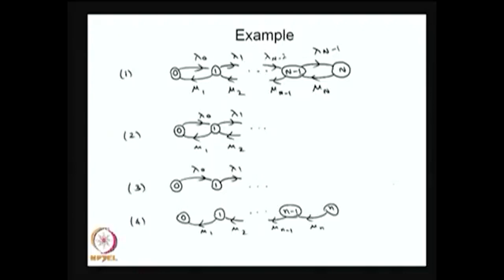The third example: the system keeps moving forward, so all states are transient. It is not irreducible — it is a reducible model. As t tends to infinity, the system will be in some infinite state, so one cannot define an infinite state and the limiting distribution does not exist. The fourth example is a finite model, but all states do not communicate with all other states, so it is reducible. Whenever the system starts from some state other than 0, it keeps moving backward, and once it reaches state 0, it will be there forever. Therefore state 0 is the absorbing barrier.